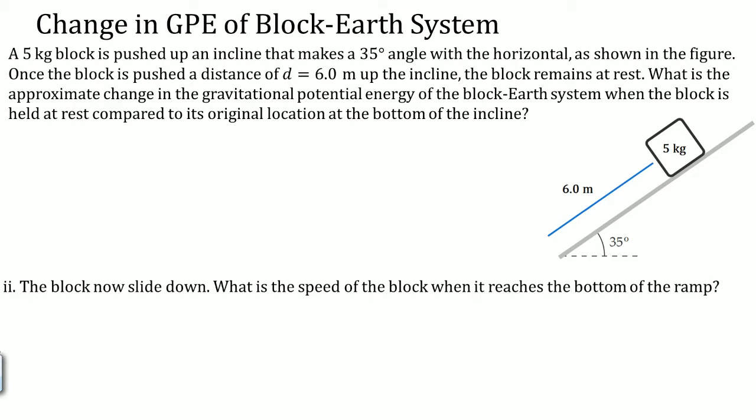Here a 5 kilogram block is pushed up on an incline that makes a 35 degree angle with the horizontal as shown in this figure. Once the block is pushed up a distance of d equals 6.0 meters up the incline, the block remains at rest. What is the approximate change in the gravitational potential energy of the block-earth system when the block is held at rest compared to its original location?